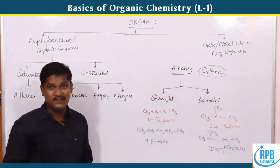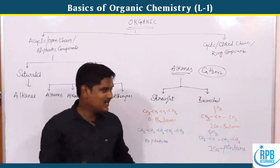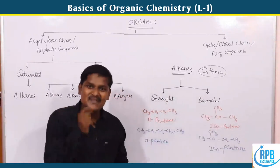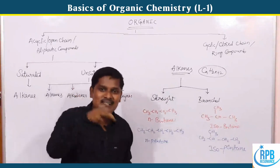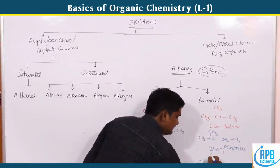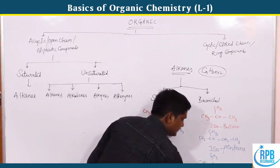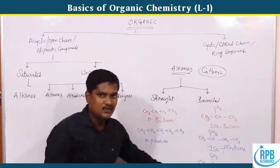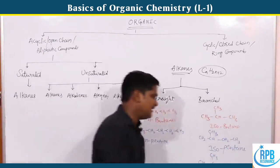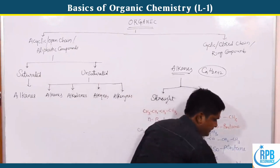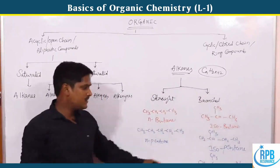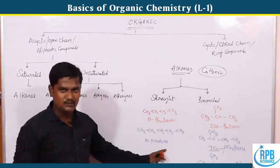If there are two methyl groups at the second position of a four-carbon chain — that is, CH3-C(CH3)2-CH3 — this neogroup arrangement gives us a compound called neopentane, as the parent chain is pentane.